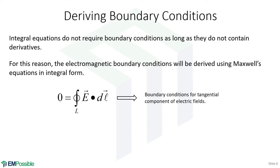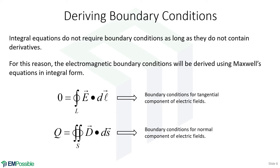From Ampere's circuit law, we will derive the boundary conditions for the tangential components of the electric fields, both E and D. And then from Gauss's law, we will derive the boundary conditions for the normal components. When we analyze problems, we'll decompose the field into its tangential and normal components, apply the boundary conditions separately to get the field in the other medium, and then combine them to get the overall field.